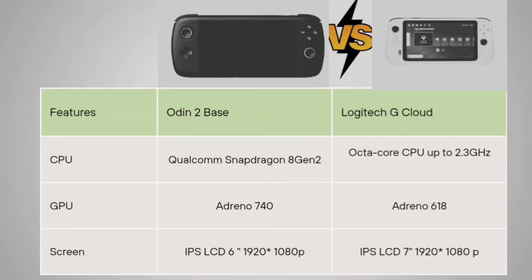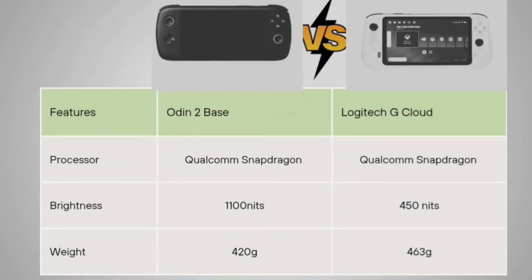The screen for the Auden 2 Base is IPS LCD 6 inches, 1920x1080 pixels. For the Logitech G Cloud it is IPS LCD 7 inches, 1920x1080p. Both use Qualcomm Snapdragon processors. Brightness of the Auden 2 Base is 1100 nits and your Logitech G Cloud is giving 450 nits.